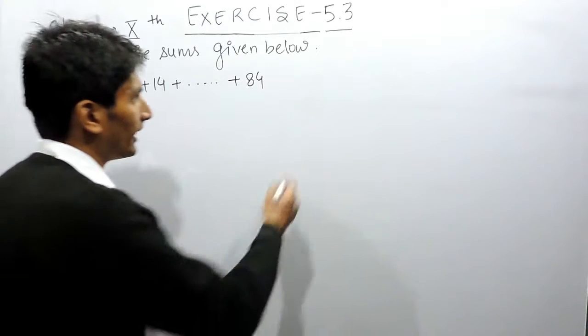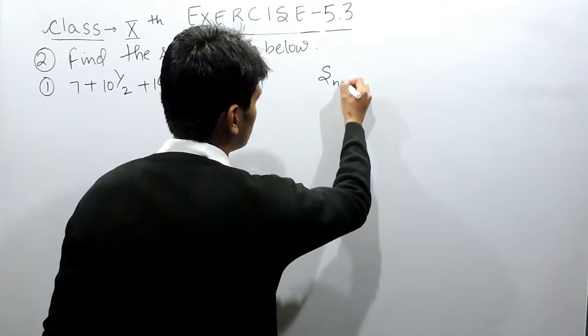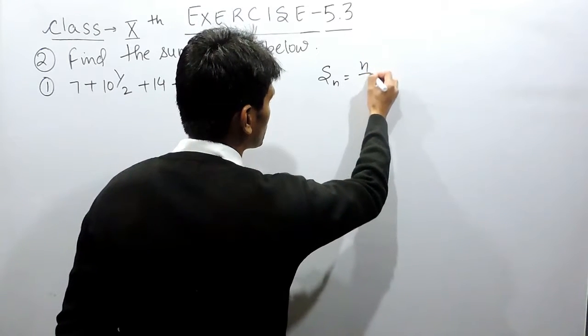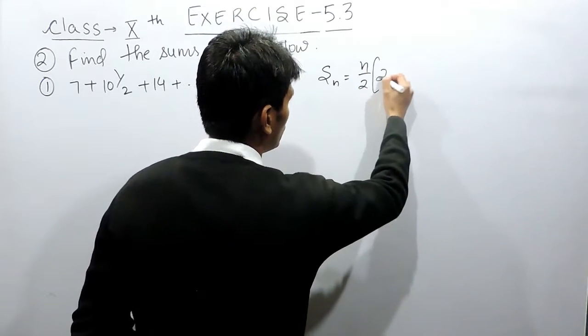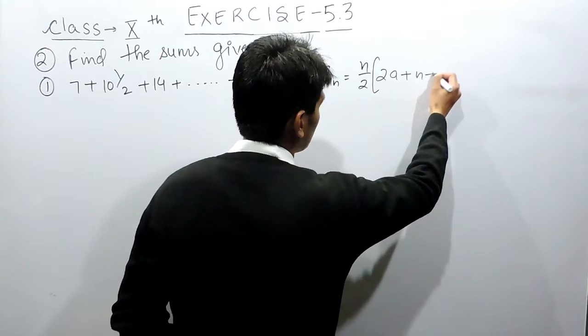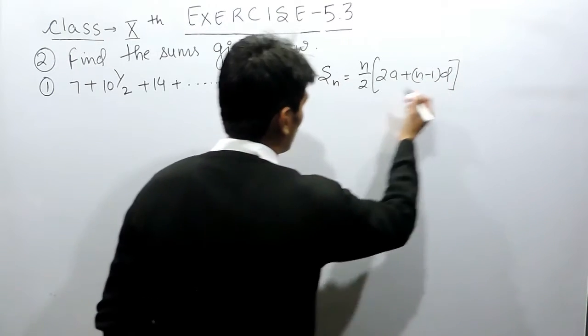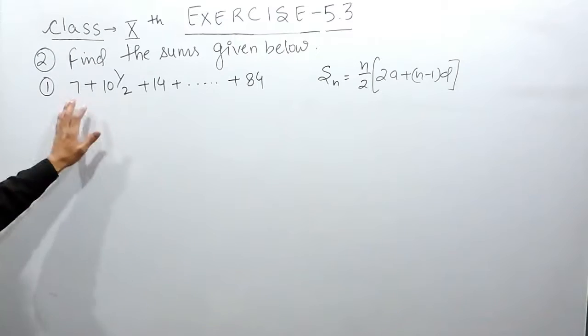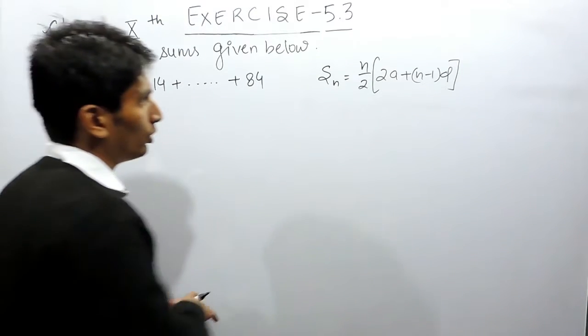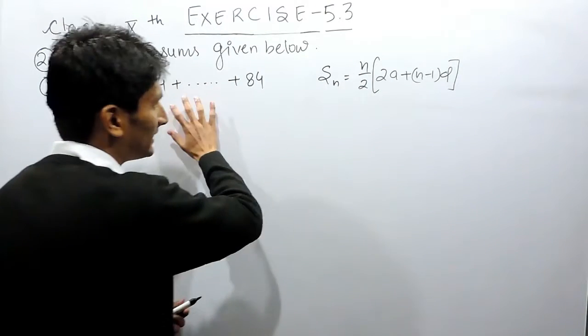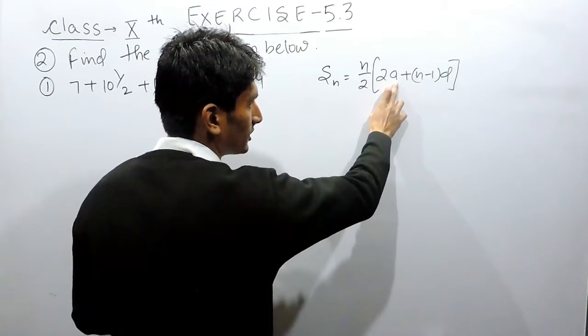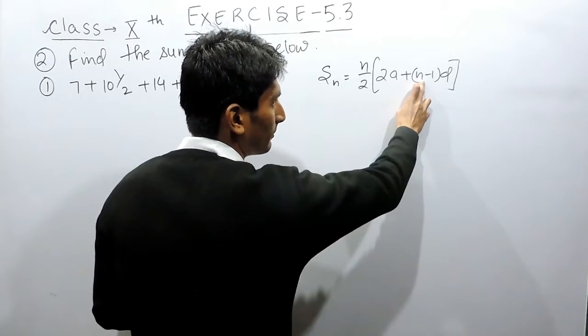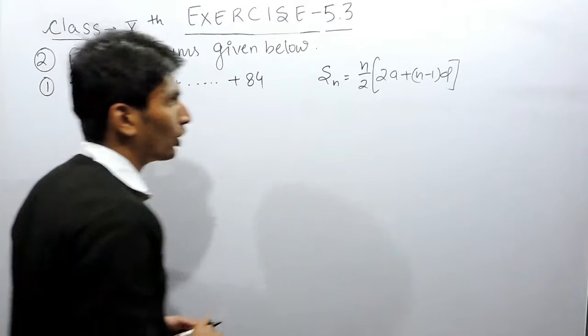We know that the formula for the sum of any arithmetic progression is equal to n by 2, 2a plus n minus 1 into d. So if I want to find the sum of this series, I must know the number of terms in this series, the first term, and the common difference.